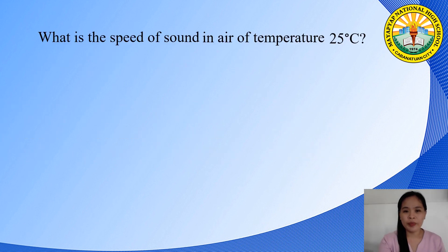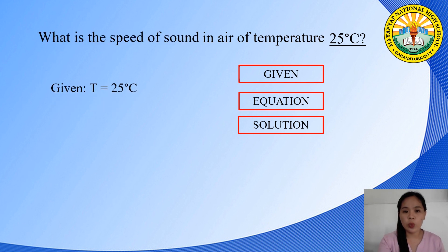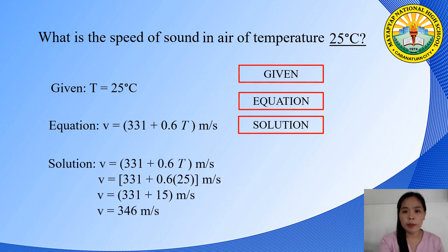For example, what is the speed of sound in air at a temperature of 25°C? We need to identify the given, determine the equation, and write the solution. The equation is V = 331 + 0.6 × T. Substituting the value of temperature, the speed of sound in air at 25°C is 346 meters per second.